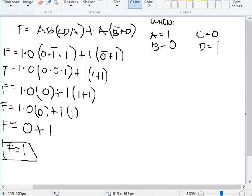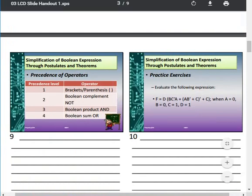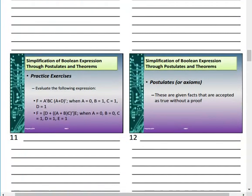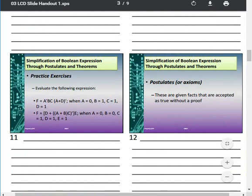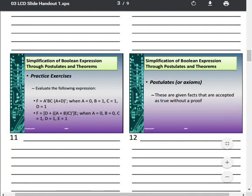That is the process. You will now answer this practice exercise — three items total — and send it to me with the solution via email. Another way of simplification is through the Boolean Algebra postulates, also known as axioms. These are given facts accepted as true without proof.